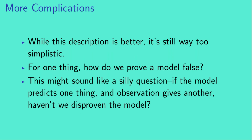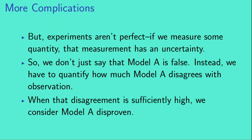While this description is better, it's still too simplistic. How do we prove a model false? This might sound like a silly question — if the model predicts one thing and observation gives another, haven't we disproven the model? The issue, however, is that experiments aren't perfect. If we measure some quantity, that measurement has an uncertainty, it has an error bar on it. So we don't just say that Model A is false; instead, we have to quantify how much Model A disagrees with observation. When that disagreement is sufficiently high, then we can consider Model A disproven.